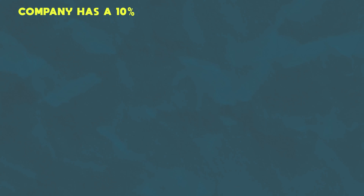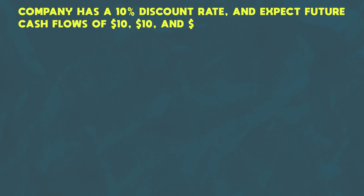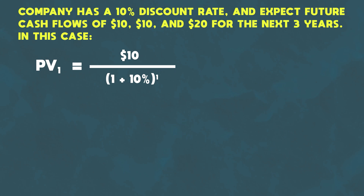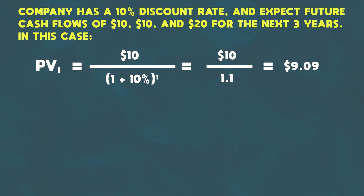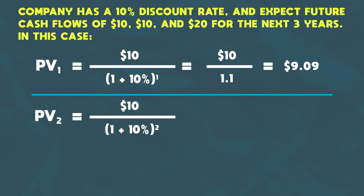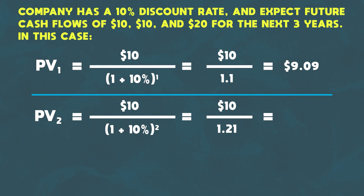For example, let's say a company has a 10% discount rate and you expect future cash flows to be $10 in year one, $10 in year two, and $20 in year three. The present value of the year one cash flow is $10 divided by (1 + 10%)^1, which is $10 divided by 1.1, giving you $9.09. The present value of the year two cash flow is $10 divided by 1.1 squared, because you're discounting it back by two years — $10 divided by 1.21 equals $8.26.